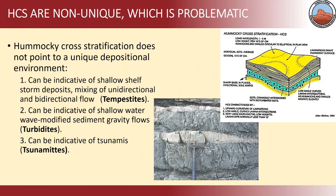Hummocky cross-stratification is problematic. There can be more than one genesis of its origin. It can be indicative of storm deposits — tempestites is the word. It can also be suggestive of turbidites in some cases in shallow water. But also, it can be indicative of tsunamis.